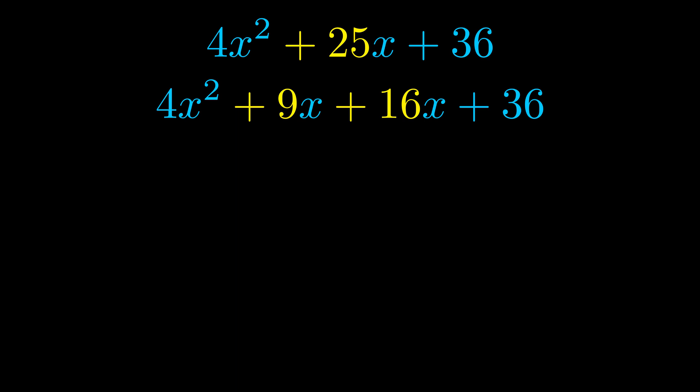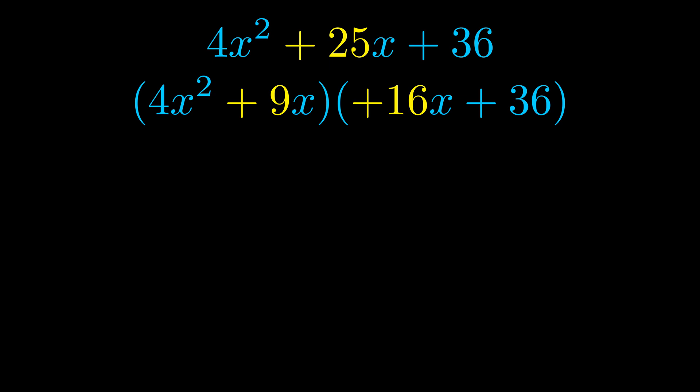Once we've done this, we go ahead and put parentheses around the first term and the last term. And we do that so that we can take the greatest common factor out of both terms. We can see the greatest common factor is now outside in green.